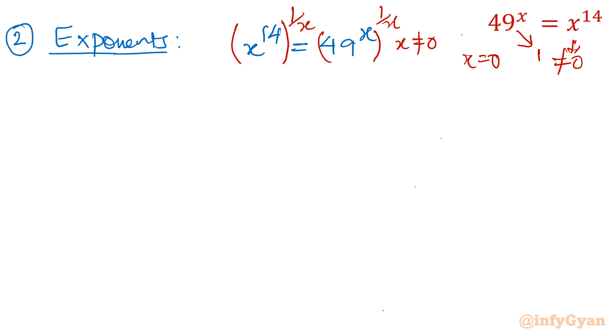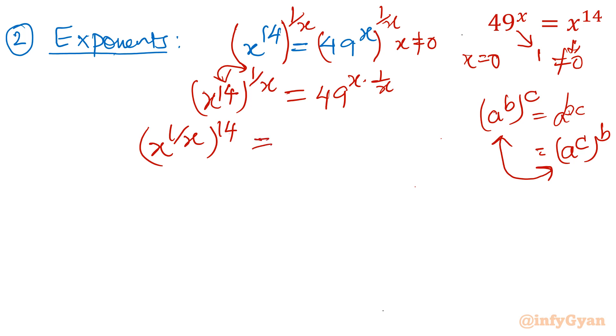So from this LHS, we will write x^14 whole power 1 over x. From RHS, we can write 49^x times 1 by x by the very popular property of exponent. That is a^bc. And yes, it is useful in the LHS. So I am going to swap by this third relationship. So I will write here x^(1/x) whole power 14 equal to 49.